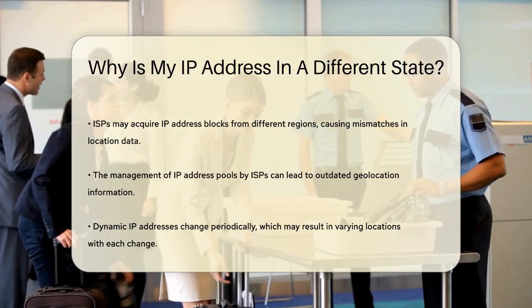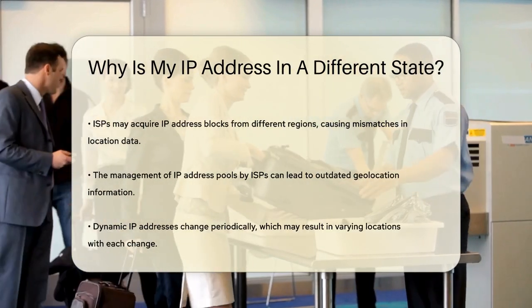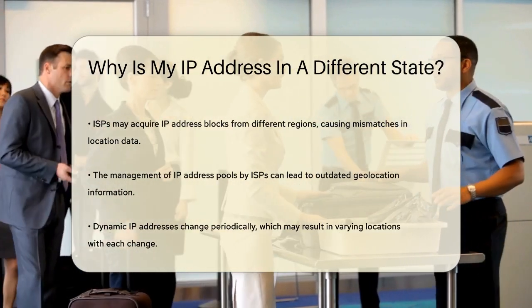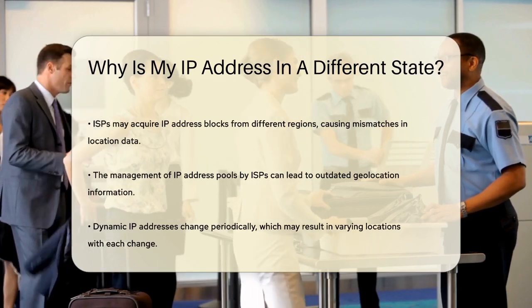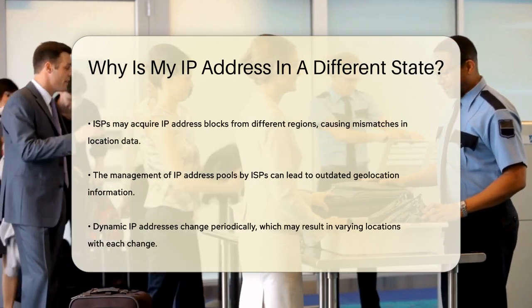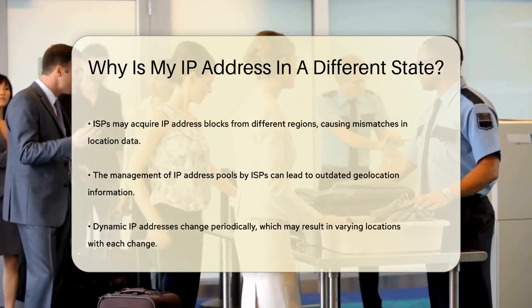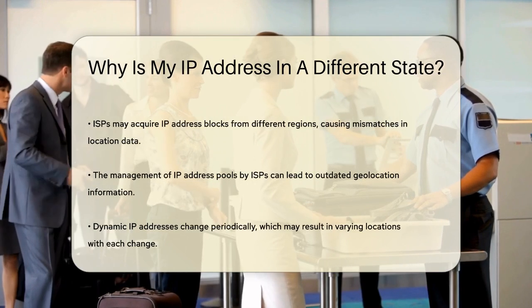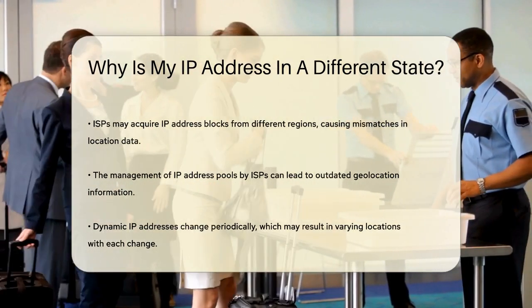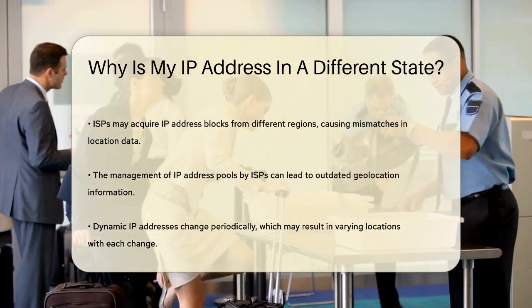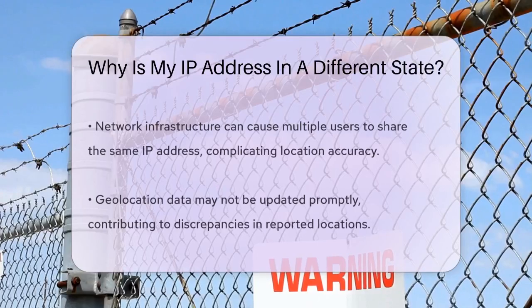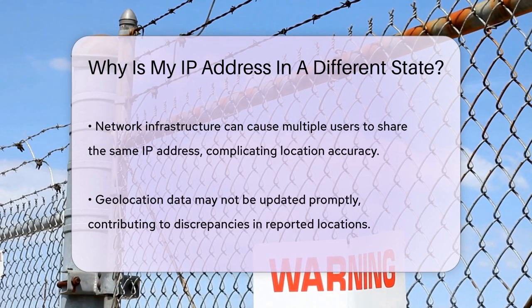Another reason this happens is due to how ISPs manage their IP address pools. They often shuffle these addresses around the country, and the geolocation data associated with these addresses might not get updated immediately. This can lead to your IP address showing a different location than where you actually are. Additionally, if you're using a dynamic IP address, which changes periodically, you might notice your location changing each time your IP address changes, because dynamic IP addresses are assigned from a pool that can include addresses from various geographic locations.